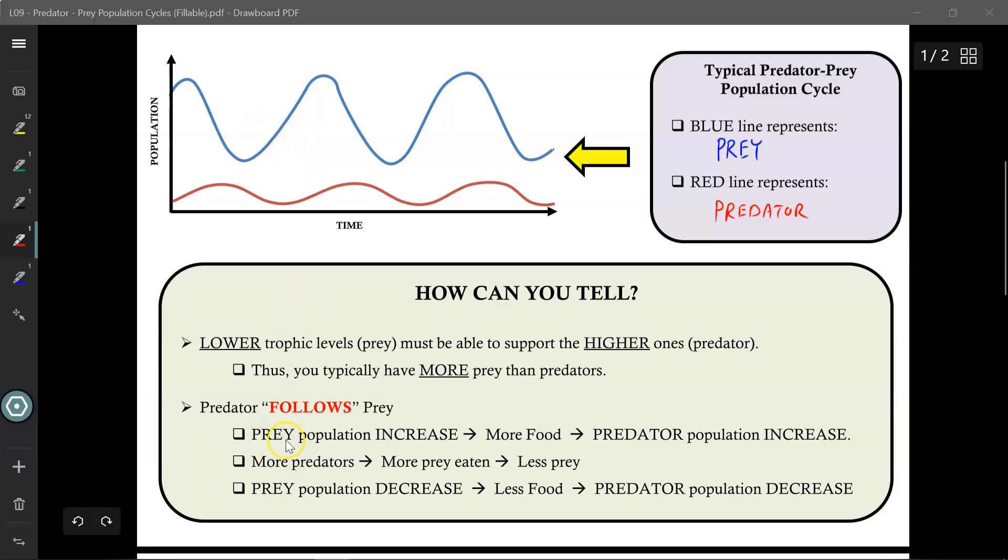What I mean is, when the prey population increases, there's now more food for the predators. We see the prey population increasing—maybe the deer population, as an example. If there's more deer, then there's more wolves to support. However, once you have too many wolves, they're overhunting the deer, and so the deer population will decrease. More predators means more prey get eaten, which means there's less prey.